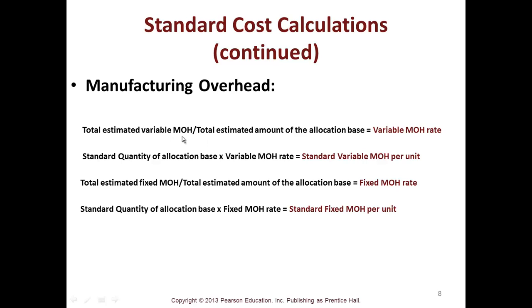For manufacturing overhead, the variable manufacturing overhead rate equals total estimated variable manufacturing overhead divided by total estimated amount of the allocation base. The fixed manufacturing overhead rate equals fixed manufacturing overhead divided by total estimated amount of the allocation base. These are a lot of words for a very basic equation.